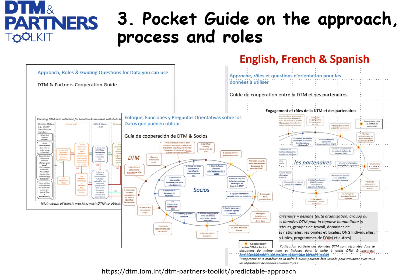The pocket guide on the approach, process, and roles summarizes in a very short number of pages how DTM and Partners can work together and how they can engage for useful and usable data. It's a pocket guide — it can be carried around, it's very easy to consult, and very short.